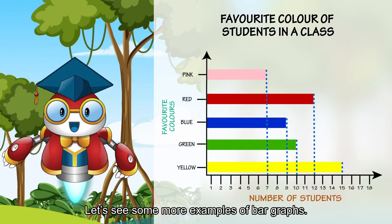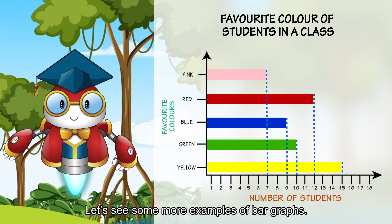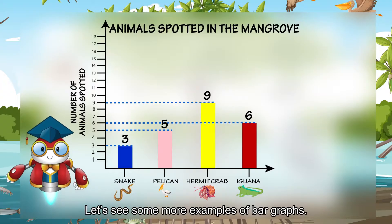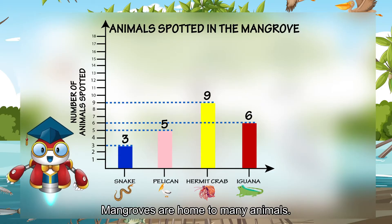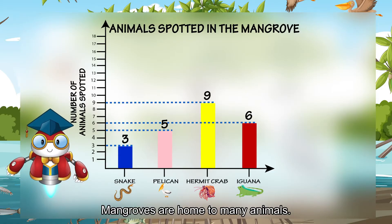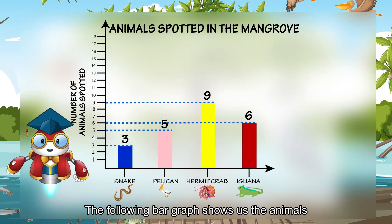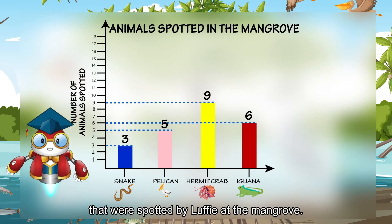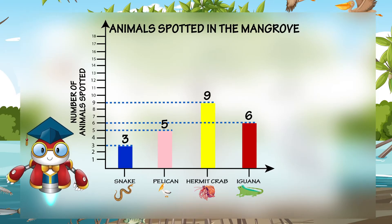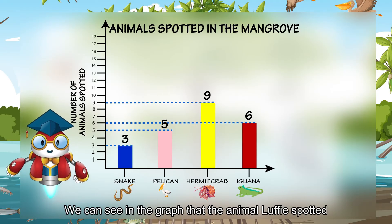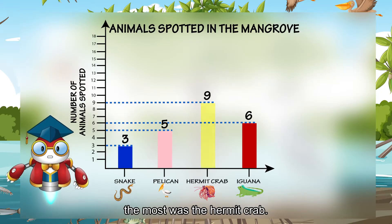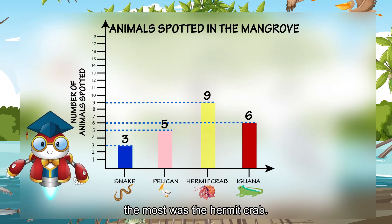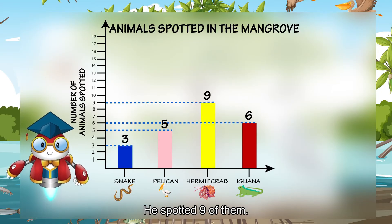Let's see some more examples of bar graphs. Mangroves are home to many animals. The following bar graph shows us the animals that were spotted by Luffy at the mangrove. We can see in the graph that the animal Luffy spotted the most was the hermit crab. He spotted nine of them.